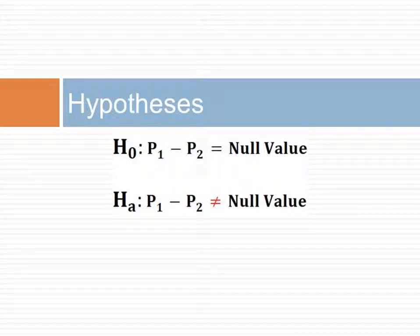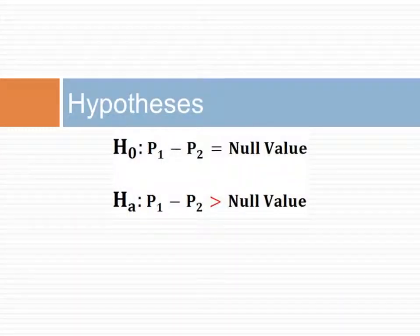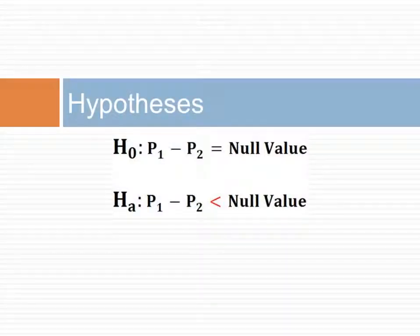In our framework for hypothesis testing, the next step is to state the hypothesis. The null hypothesis is that the difference of the two rates equals the null value, typically zero. The alternative hypothesis, if we are doing a two-sided test, is that the difference of the two rates is not the hypothesized null value. If doing a one-sided test, the alternative hypothesis is that the difference of the two independent rates is higher than the null value, or that it is less than the null value.